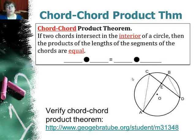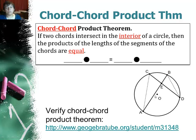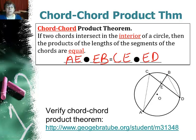The chord-chord product theorem states: if two chords intersect in the interior of a circle, then the products of the lengths of the segments of the chords are equal. So AE times EB equals CE times ED.